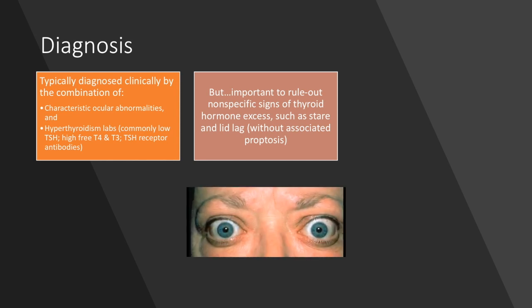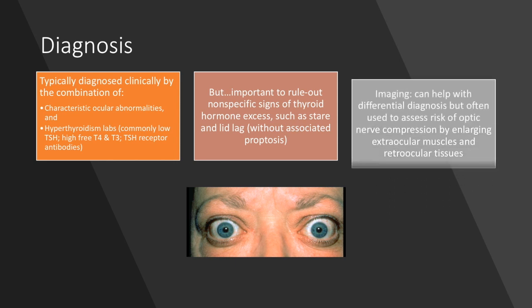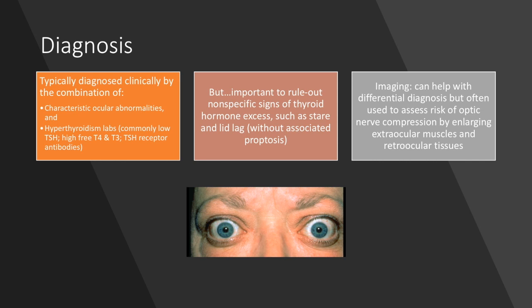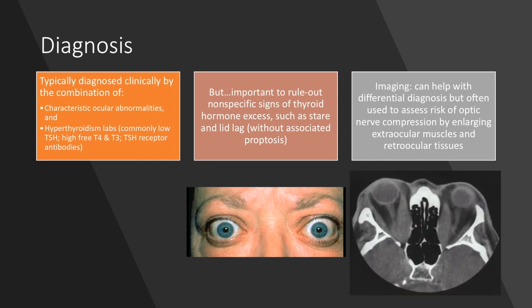Imaging can help with differential diagnosis, but is more often used to assess the risk of optic nerve compression by enlarging extraocular muscles and retroocular tissues. Here is another example of massively enlarged extraocular muscles, with the red arrow pointing at the swollen medial rectus muscle on each side.